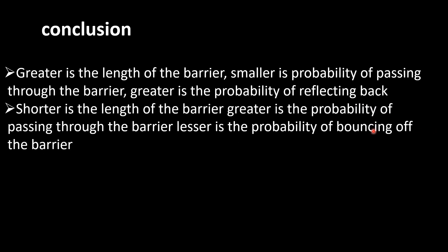Our second conclusion is that the shorter the length of the barrier, the greater is the probability of passing through the barrier and the lesser is the probability of bouncing back. When the barrier length becomes short, the wave function needs to travel less distance inside the barrier, giving it a greater chance to pass through with greater amplitude. So the probability of tunneling through the barrier becomes greater and the probability of bouncing off the barrier becomes lesser.